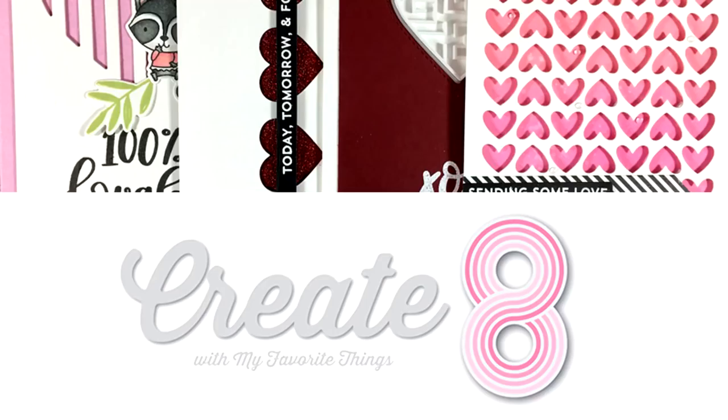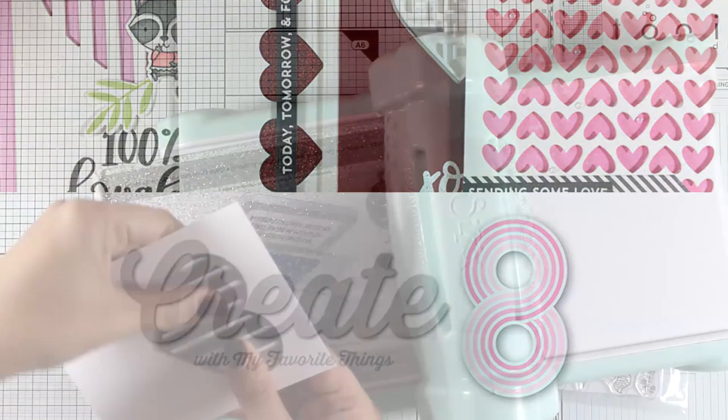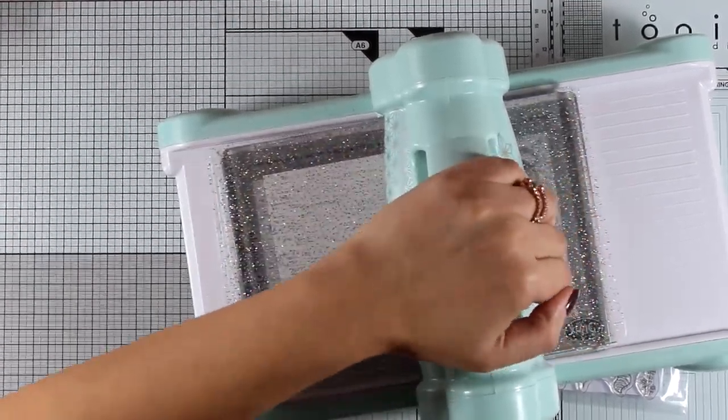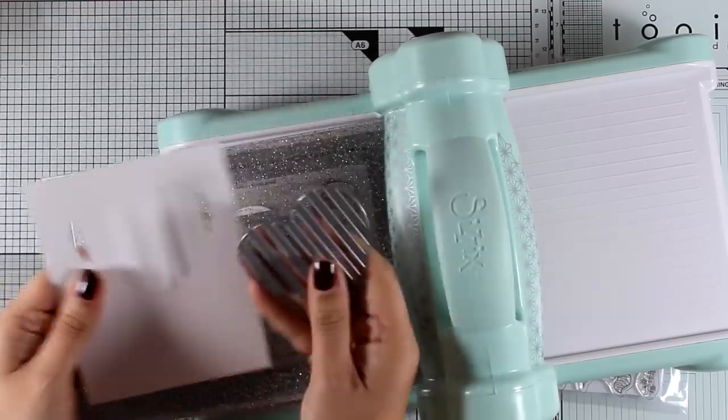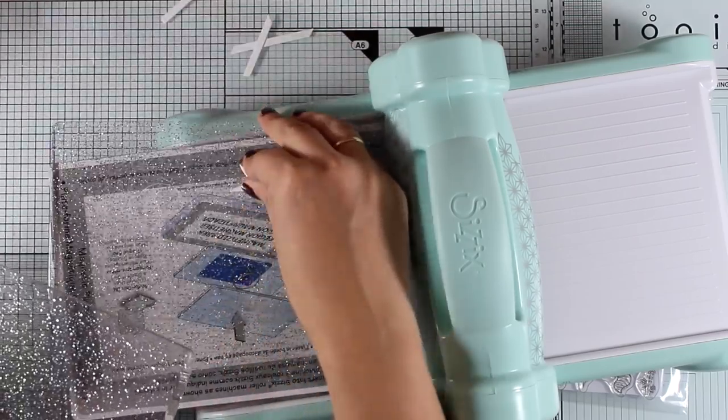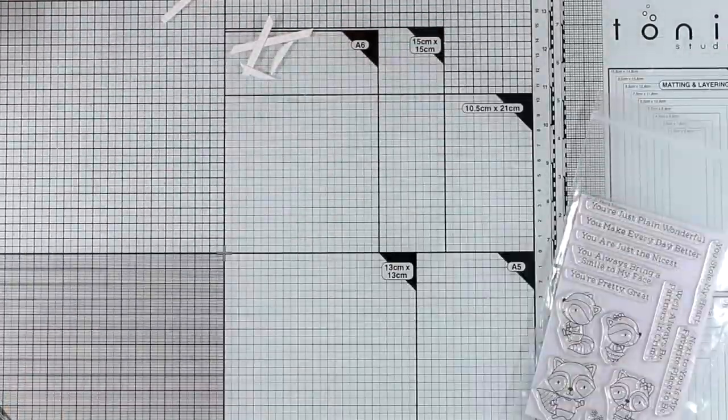Hi everyone and welcome back to part 2 of this month's create date. I'll be creating four more cards using the products from the January release by My Favorite Things. I'm starting with my first card using the striped heart die from the latest release. It cuts out this lovely window heart on top of my panel.